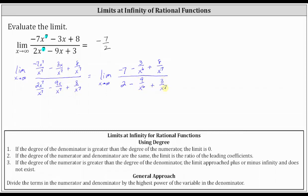Now from here, remember, whenever we have a constant in the numerator and the denominator approaches infinity or negative infinity, the value approaches zero. So going through each term: negative seven is not affected by x; minus three divided by x to the sixth approaches zero as x approaches infinity; and eight divided by x to the seventh also approaches zero.